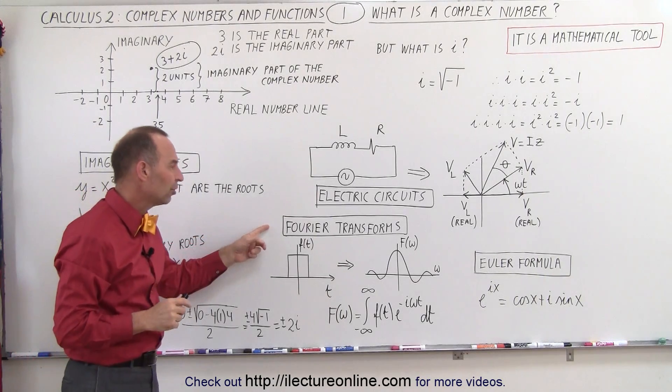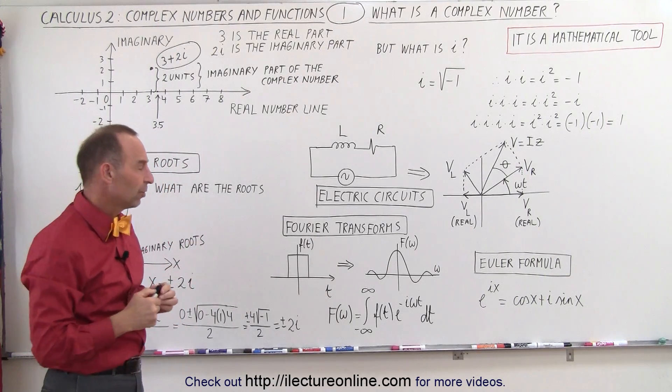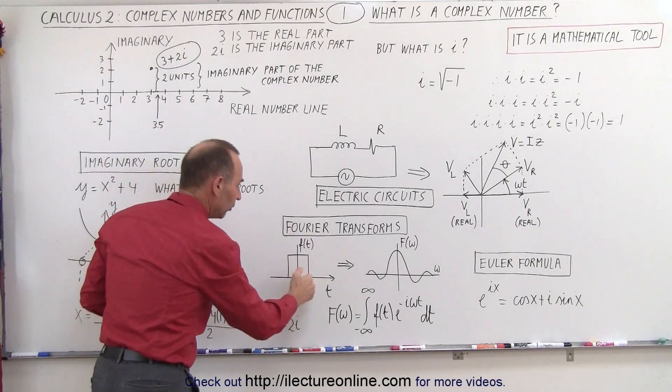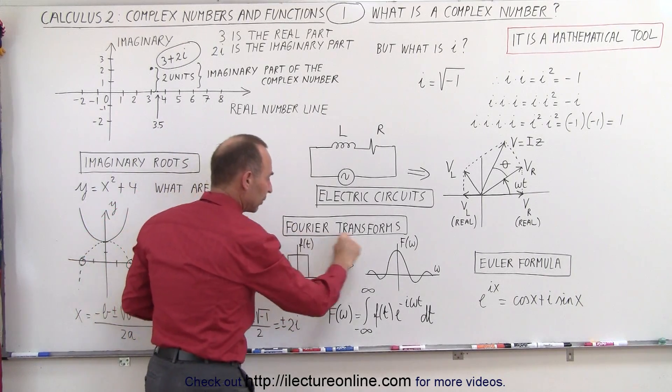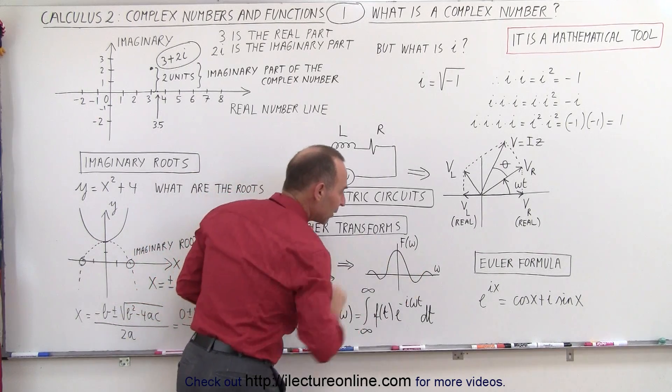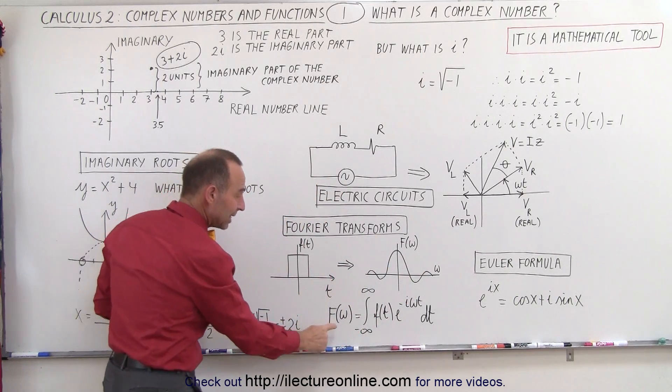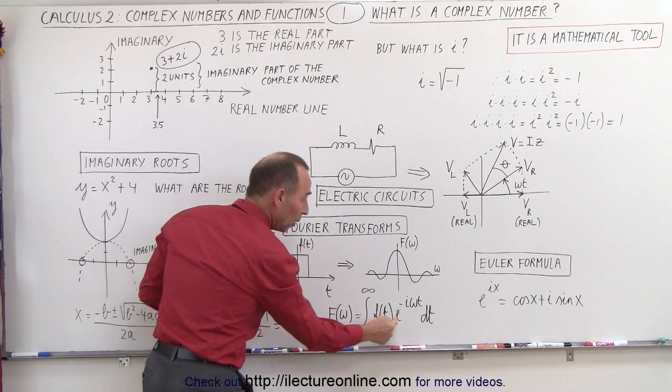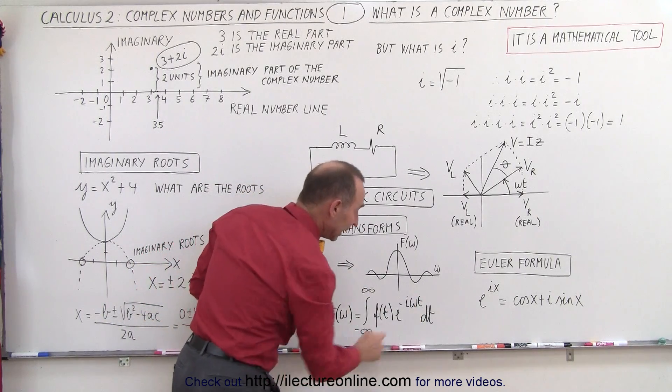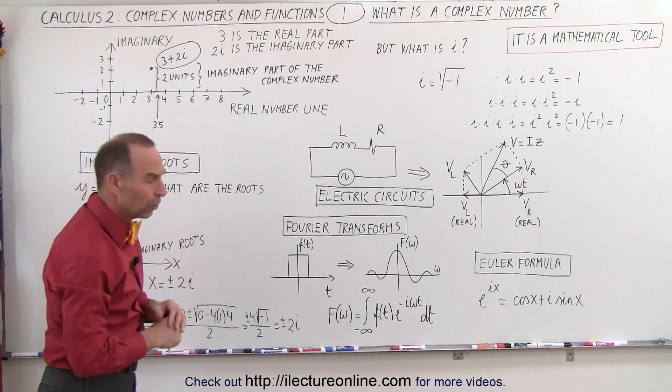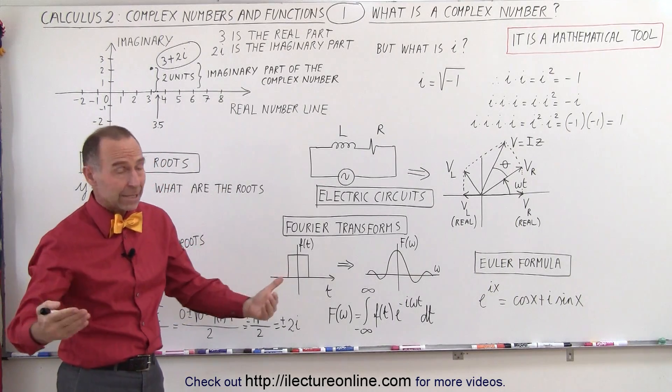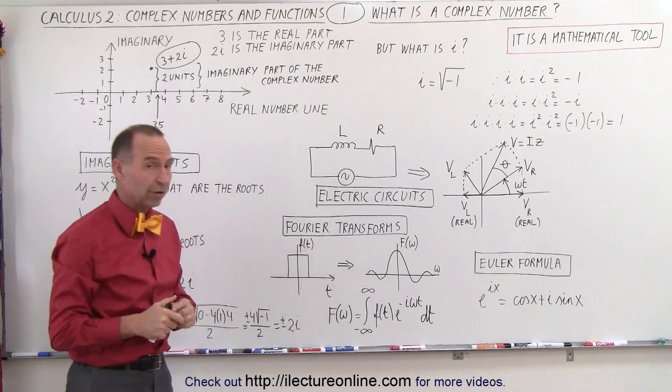We can use imaginary numbers in Fourier transforms. If we have an electrical pulse in the time domain, and then we transform it via the Fourier transform into the frequency domain, we can see that the equation necessary to do that requires an imaginary number in the exponent there underneath the integral sign. So, again, it shows that, well, we need it. Otherwise, we couldn't do that Fourier transform.